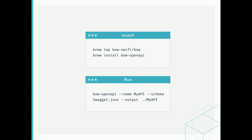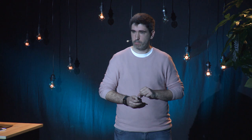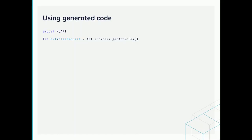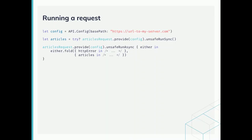Bow OpenAPI will take every operation in the specification file and generate a pure Swift function. And for each data model described in the file, it will generate an immutable value object based on Swift enums and structs. Using the generated code is as easy as importing it into your project and finding the method you want to invoke starting from the API entry point. If you actually want to run the request, you create a configuration object, supply it to the request, and then invoke run sync or async depending on the execution model you'd like to have.